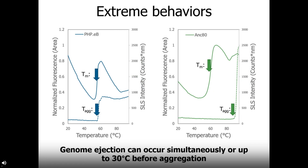Checking out a couple more interesting serotypes, we can see the extremes of aggregation and genome ejection behaviors. On the left, PHP.eB, and on the right, Ancient80 — these are at extreme ends of the spectrum for serotypes we've tested. For PHP.eB, the aggregation temperature lines up exactly with the genome injection temperature. But with Ancient80, there's actually the largest difference we've seen — a 30°C gap between genome ejection and aggregation behaviors. Importantly, that aggregation behavior always syncs up with the protein unfolding behavior from the capsid, so even using only the blue laser with Cybergold dye, we can infer where protein unfolding occurs because it lines up with the onset of aggregation.